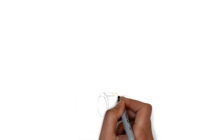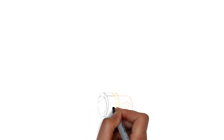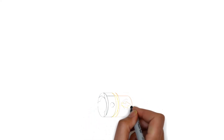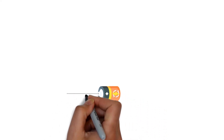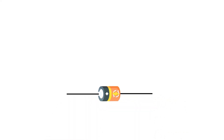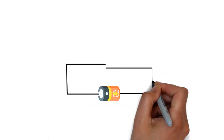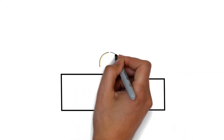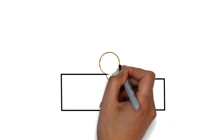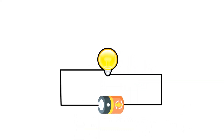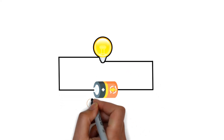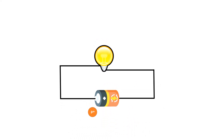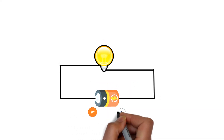Let us understand this with the help of a circuit. We have a cell and a connecting wire — let us say a copper wire — connected from the positive terminal of the battery to the negative terminal, using a bulb. It is found that the bulb will glow because of the energy level difference between protons and electrons. The electrons start moving towards the protons, flowing from the negative terminal to the positive terminal.